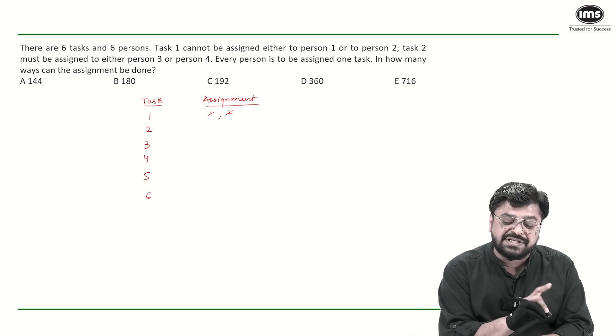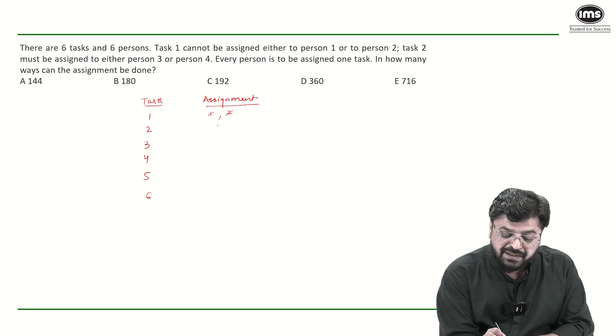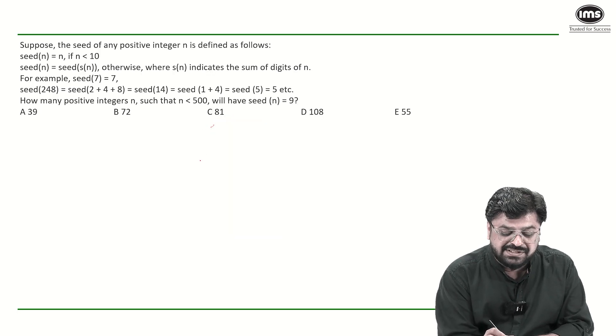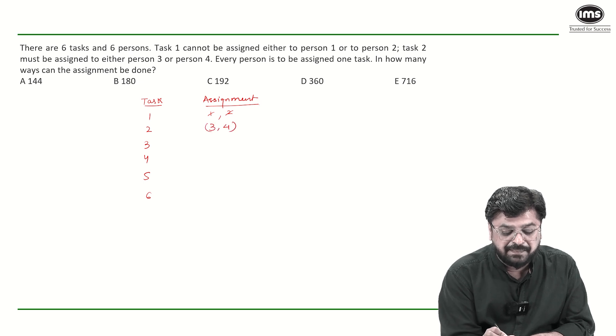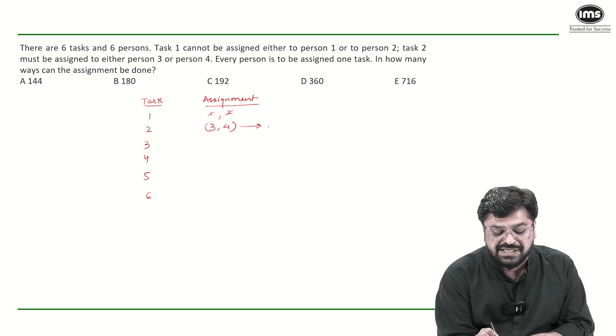They say that task 2 must be assigned to person 3 or 4, which means this task can only be assigned to person 3 or 4. So this can be assigned in 2 ways.